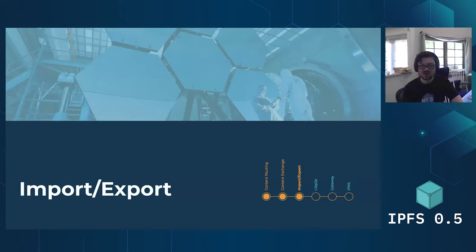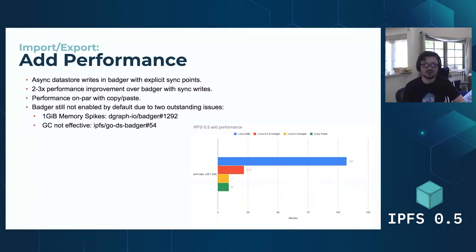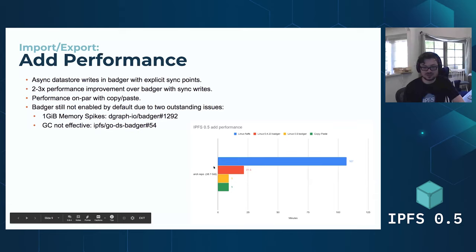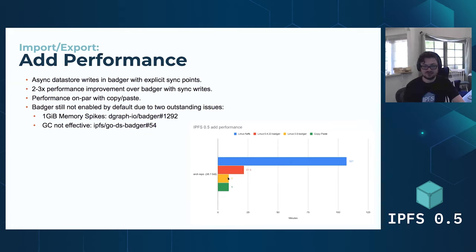Moving on to import-export — this is how we add data to IPFS and get it out of IPFS. This release has two big features here. First, add performance. In this release, we've improved our new experimental data store called Badger by two to three X. The red bar is how long it took to add the arch repo before this release; the yellow bar is how long it took after. The green bar is how long it takes to just copy and paste the arch repo on the same machine — so basically you can add data to IPFS as fast as you can just copy it from disk to disk.